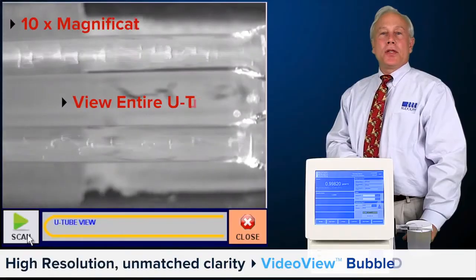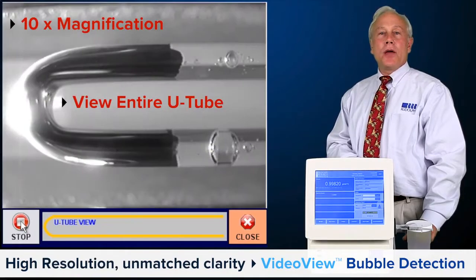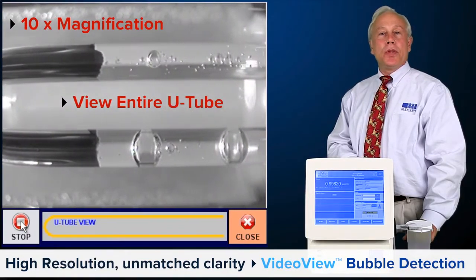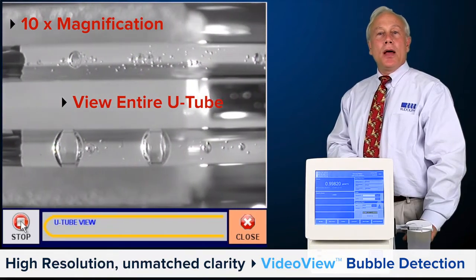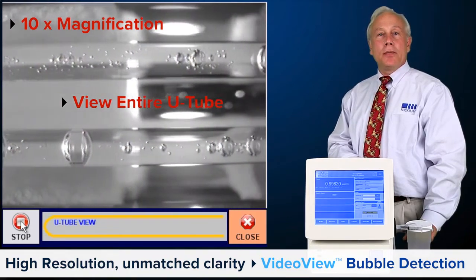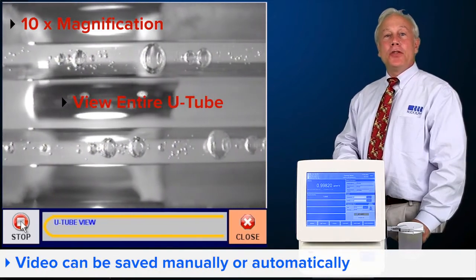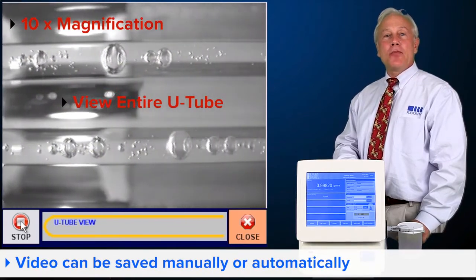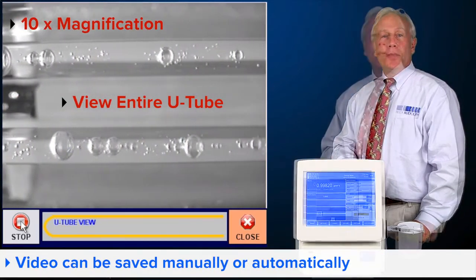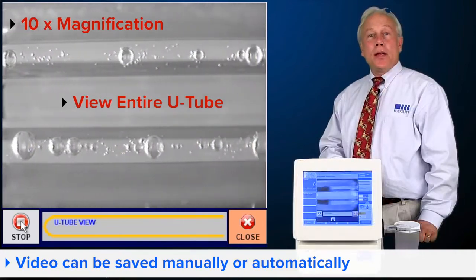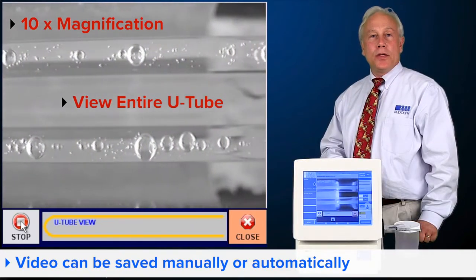Rudolph's exclusive video view provides superior high-resolution bubble detection within your sample with live on-screen video viewing. With its tenfold magnification, the full-feature scanning camera provides a complete view of the sample tube. Either manual or automatic saving of the video is possible.